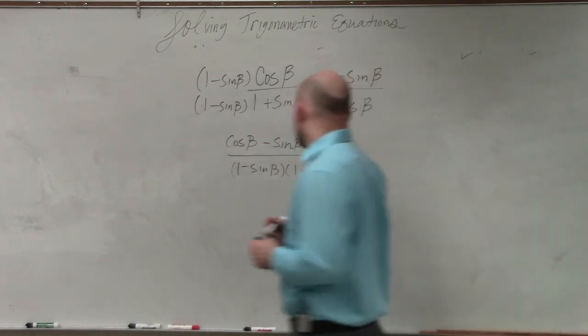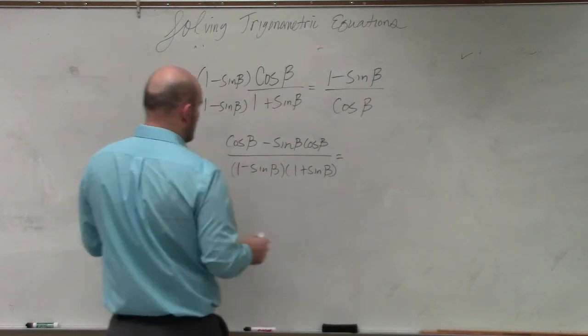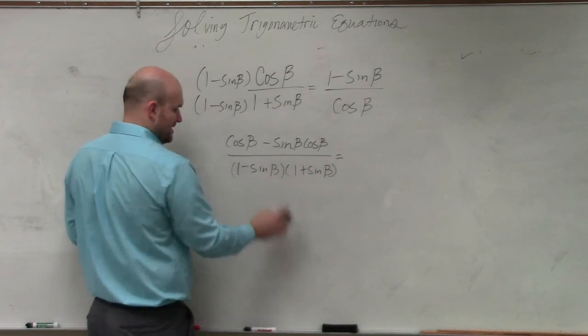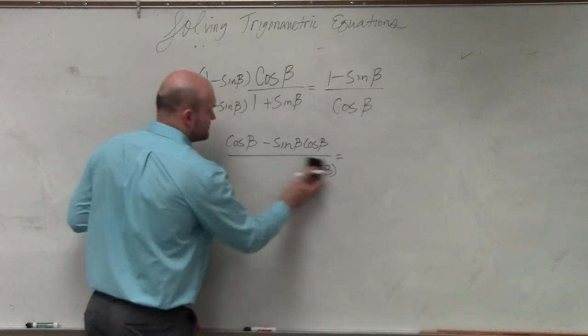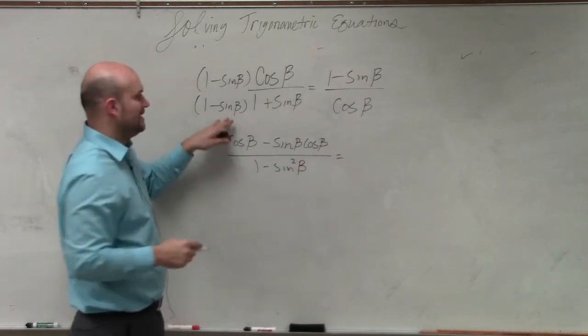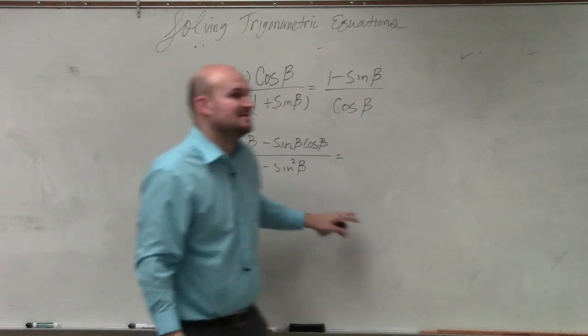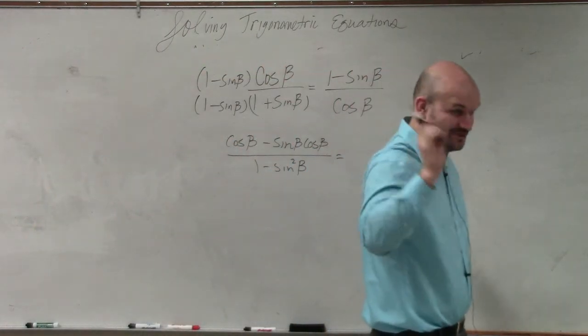Well, if I factor that out, the 1 minus sine of beta would multiply out. But I don't want that to happen yet. I want to leave that up there. So let's actually multiply this out. This is going to give us 1 minus sine squared of beta, when you multiply a difference of two squares, which, using your Pythagorean identities, is equal to cosine squared.